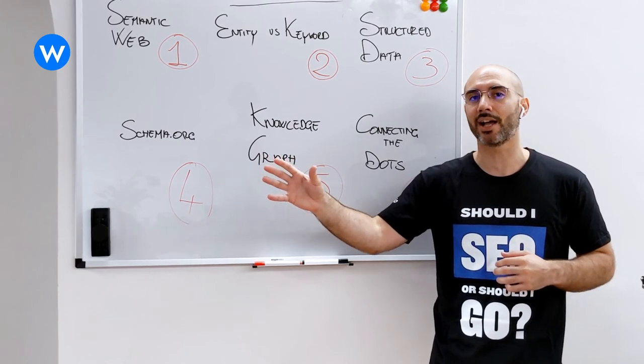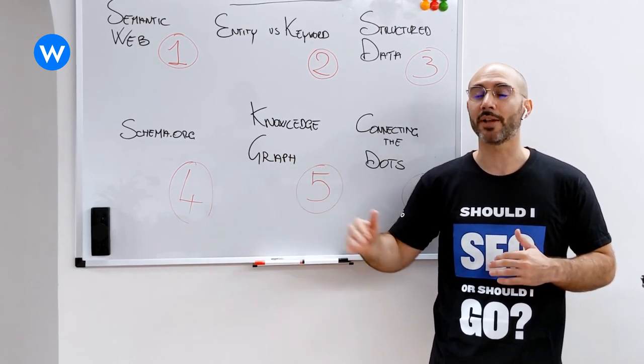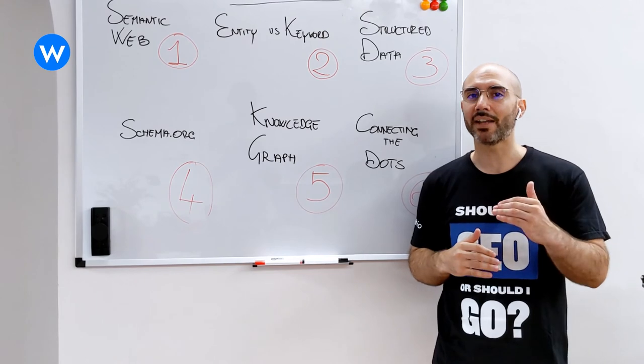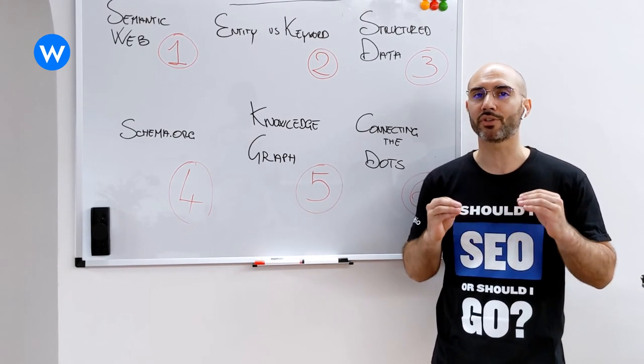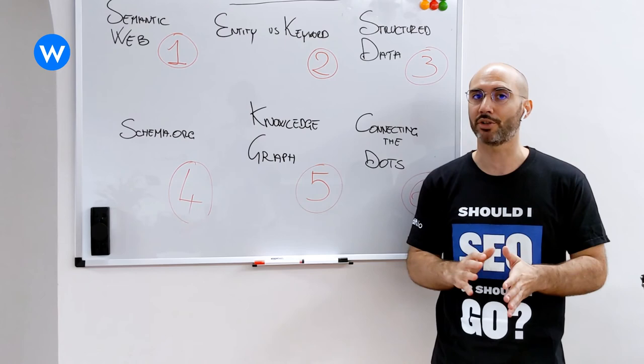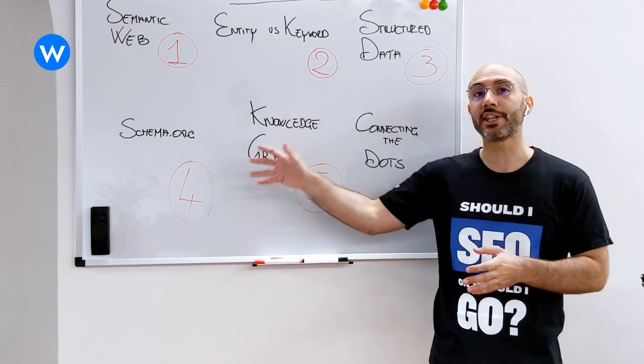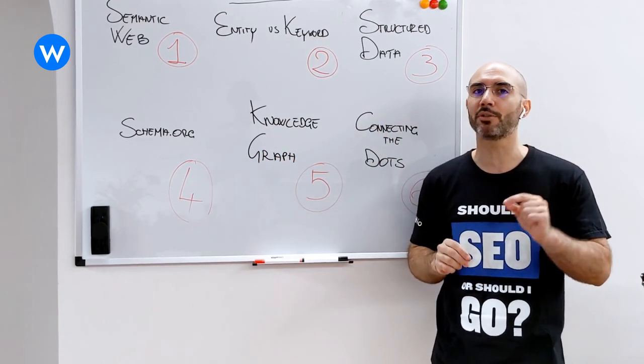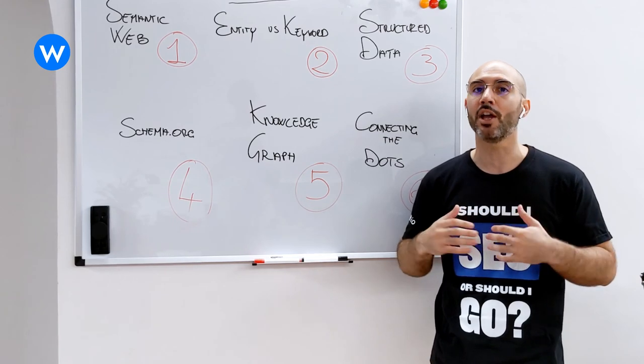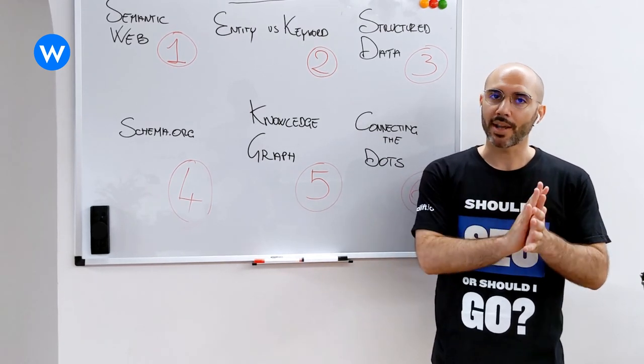In this way, we can define relationships on the web and enable search engines to understand those relationships. This is at the core of schema.org, and this is why schema.org is so important for us to power up our SEO strategy.